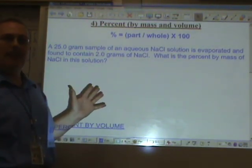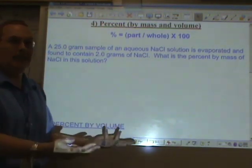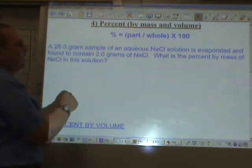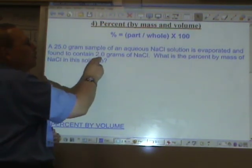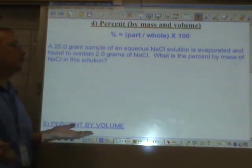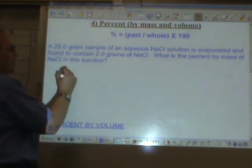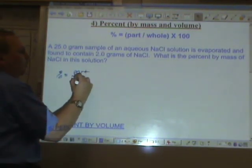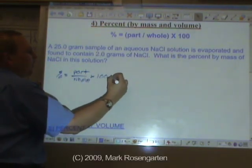The final concentration is just percent by mass and volume. This is just like parts per million, except instead of multiplying by a million, you multiply by a hundred. A 25 gram sample of an aqueous solution is evaporated and found that contains two grams of solute. What's the percent by mass of the solute? Percent equals the part over whole times one hundred.